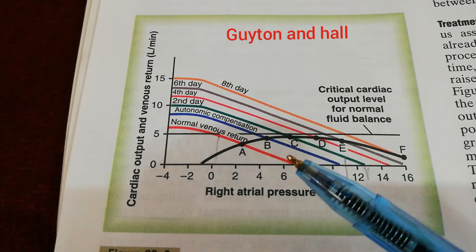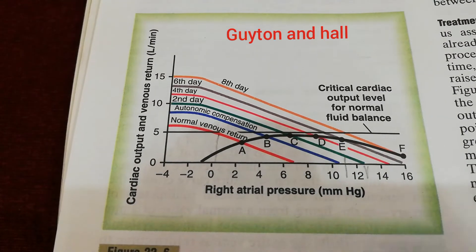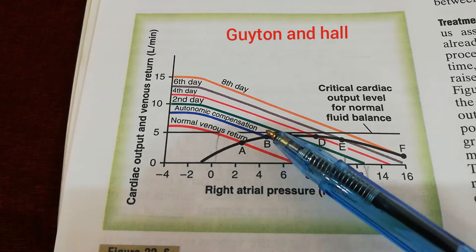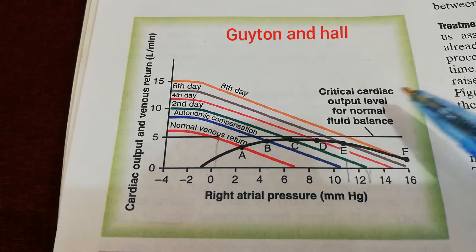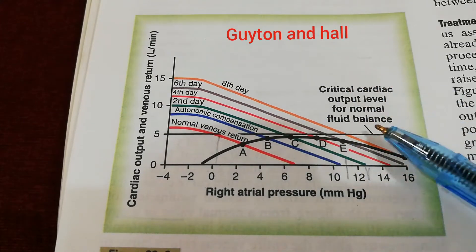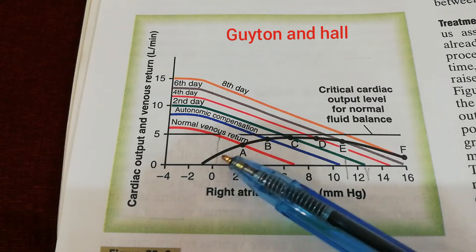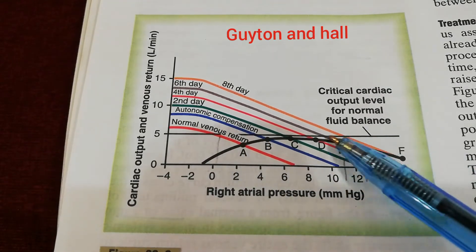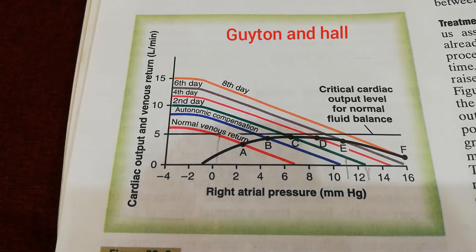In compensated cardiac failure, the cardiac output initially decreases and then increases above the critical cardiac output level. But in decompensated cardiac failure, the black color curve remains below the five liters per minute line.